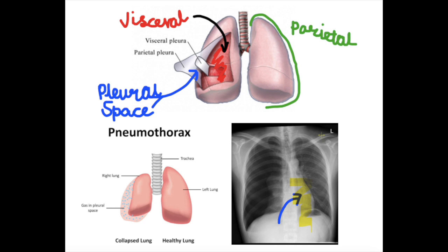The logic behind administering 100% oxygen and initiating the process of nitrogen washout is that when you administer 100% oxygen, you are creating a gradient. If I'm putting someone on 100% oxygen who has a small, spontaneous pneumothorax, their alveoli is going to have 100% oxygen, and their pleural space is going to be 78% nitrogen. That 100% oxygen in the alveoli versus 78% nitrogen in the pleural space creates a gradient difference — the partial pressure of nitrogen in the pleural space is going to be more than the partial pressure of nitrogen in the alveolar space.